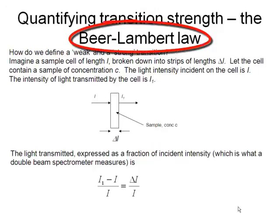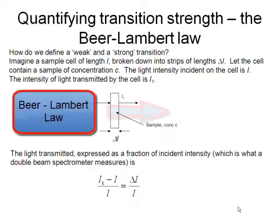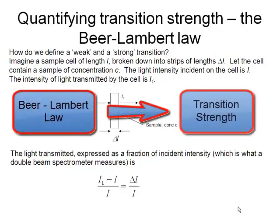We can use the Beer-Lambert law to assess the amount of light transmitted by our sample and then extract from that a constant, which we'll call the molar decadic absorption coefficient or the extinction coefficient, which characterizes the strength of a transition.